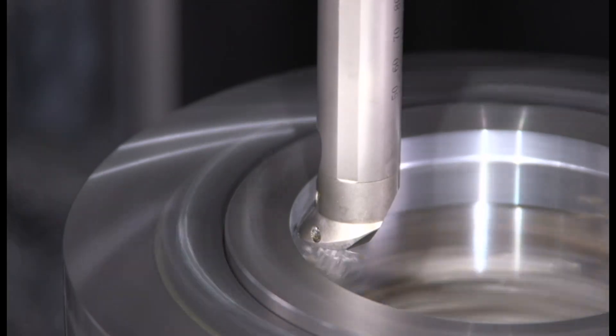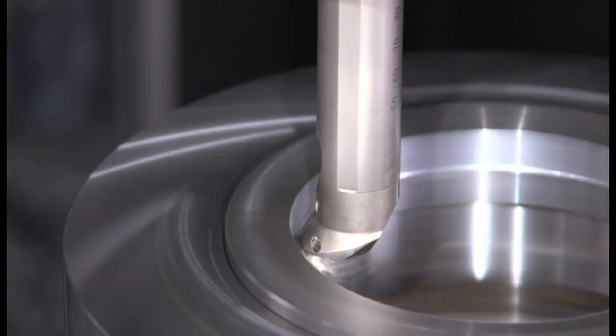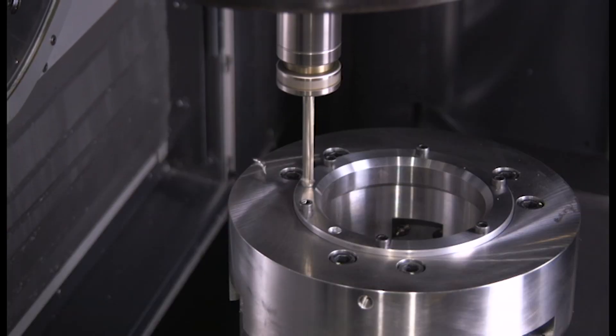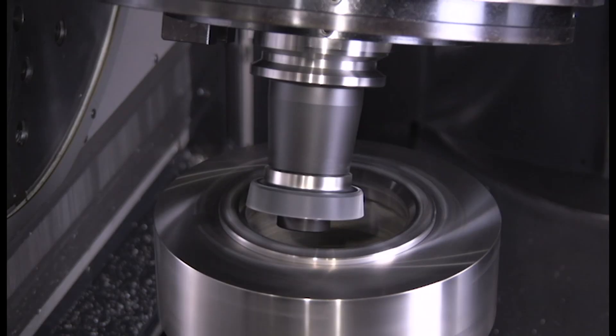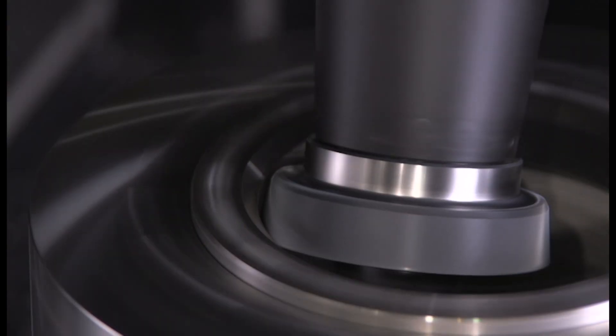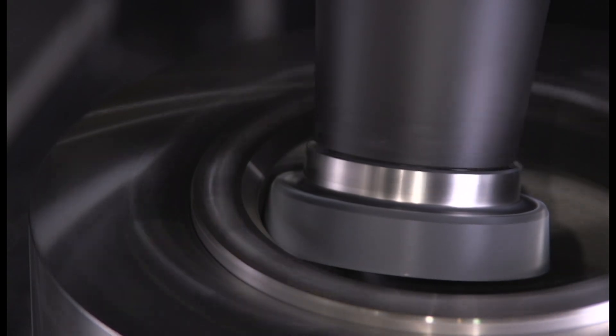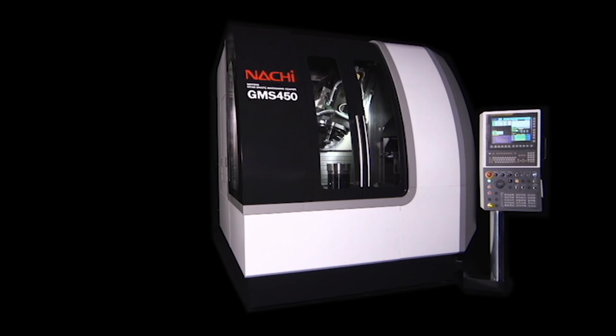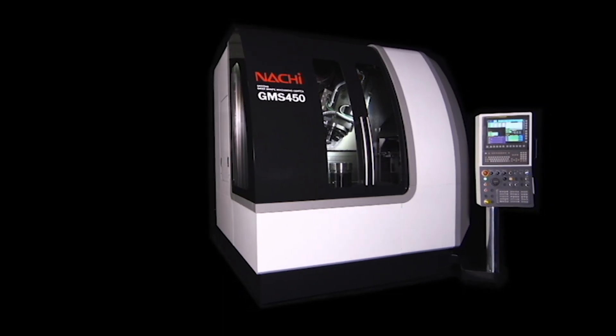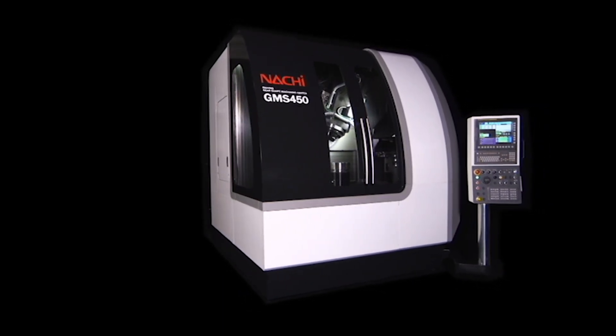The Nachi Skiving Gear Shaping Machining Center GMS450 is an integrated gear manufacturing machine that combines multiple processes for high efficiency in everything from small lot multiple workpieces up to mid-range volume production with a small footprint and easy operation. It can support a variety of gear shapes with excellent flexibility and productivity.